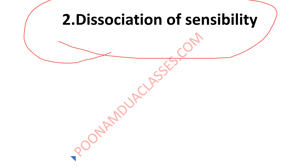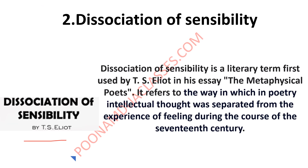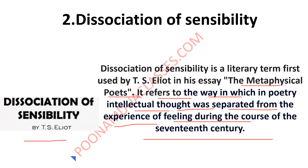Dissociation of Sensibility is a term by T.S. Eliot, discussed in relation to the Metaphysical Poets. It refers to the way in which in poetry intellectual thought was separated from experience. The Metaphysical Poets used to seem like they were writing after they had experienced, but later on experience was dissociated from writing.